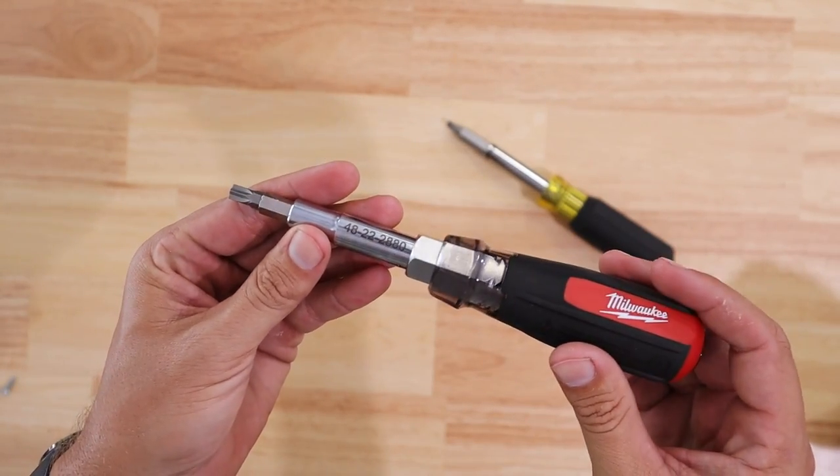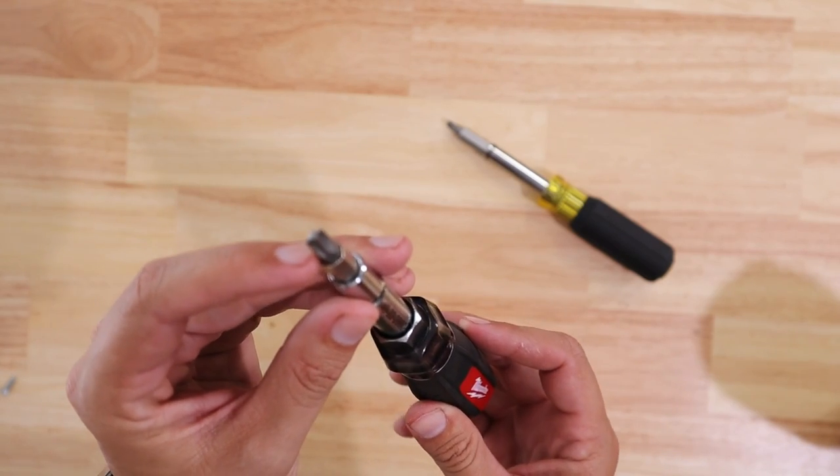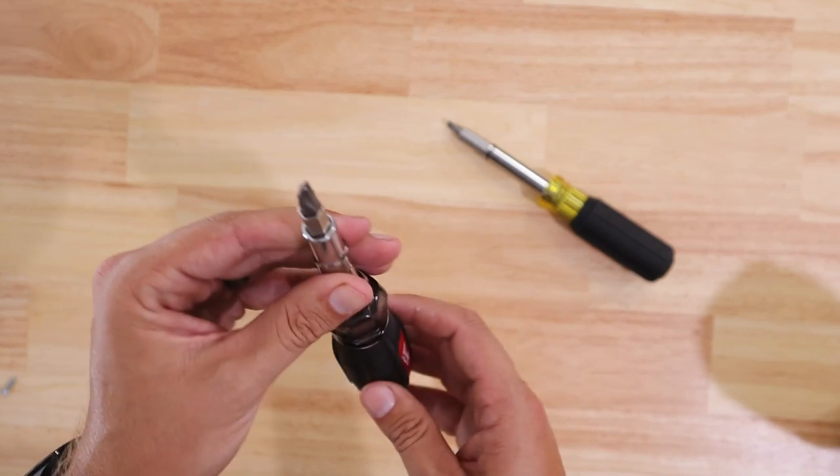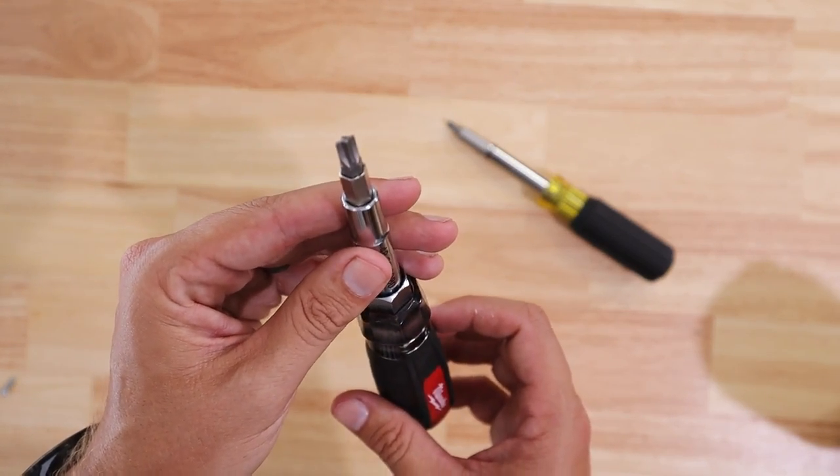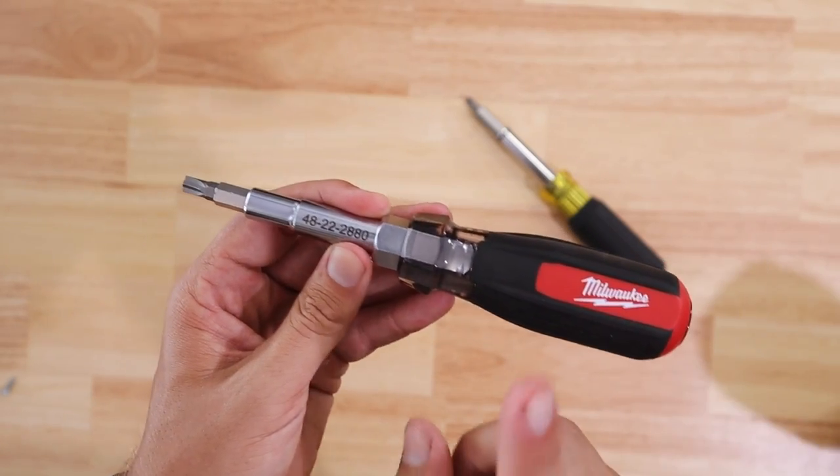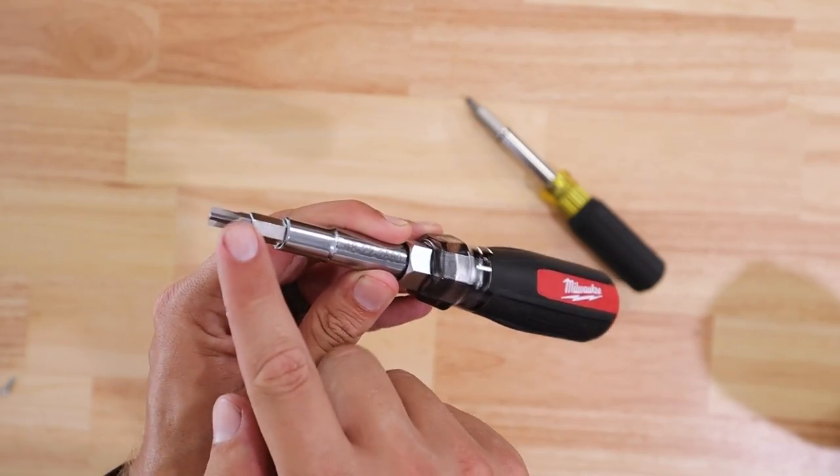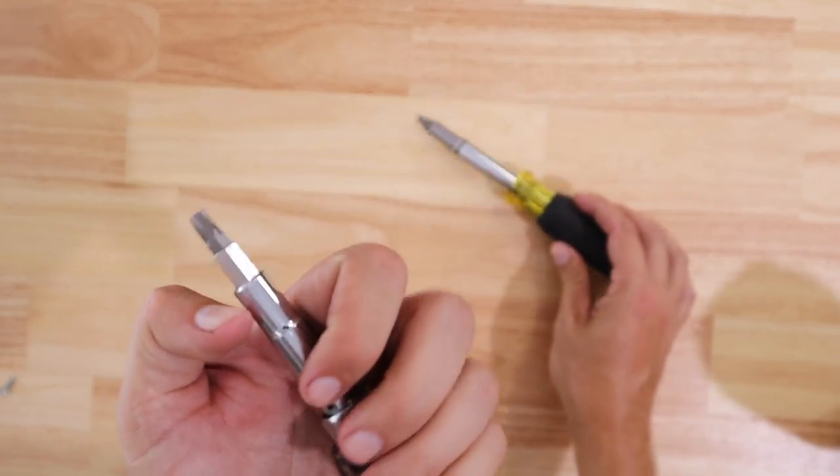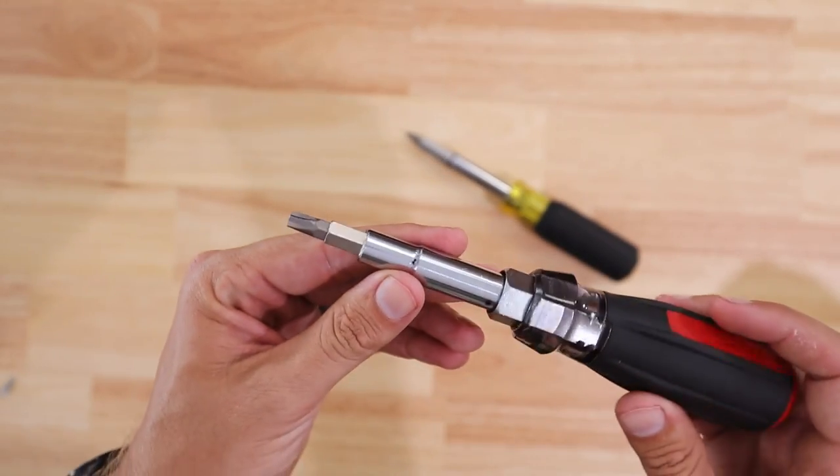This one is made by Milwaukee. This is their ECX bit. And so I actually just went out and picked one of these up the other day, just so I could compare the two to see if there were any differences. And there were some definite differences between the Milwaukee ECX bit and the Klein combination bit. But for the most part, they operated about the same.